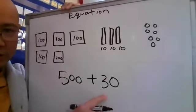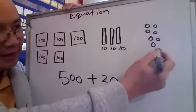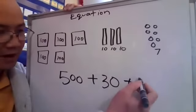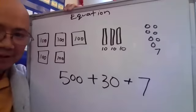500 plus 30. 1, 2, 3, 4, 5, 6, 7. And there's 7. 500 plus 30 plus 7.